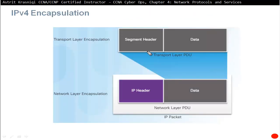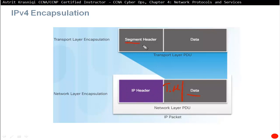The transport layer, which is Layer 4, takes data and segments it into small pieces. Each segment is passed to the IP layer, or network layer. The network layer adds an IPv4 or IPv6 header. The network layer just sees it as data — the transport header is already in there. When an IP header is added, this is called a packet. So we have segments at Layer 4, and packets at Layer 3.